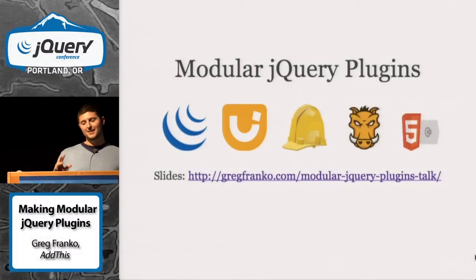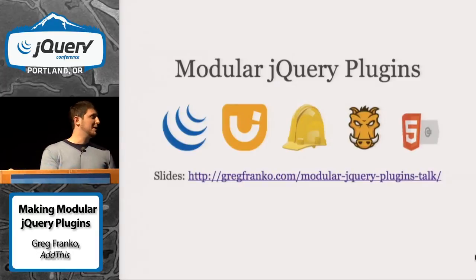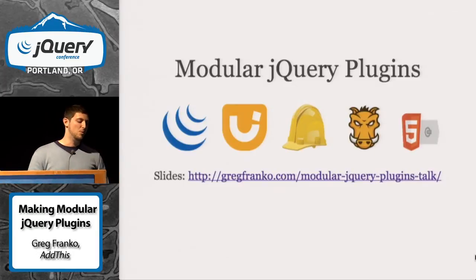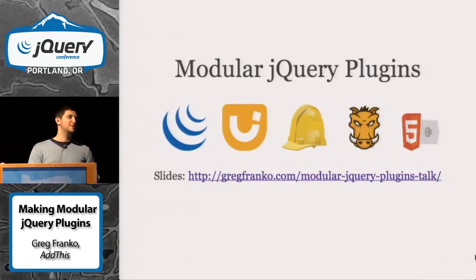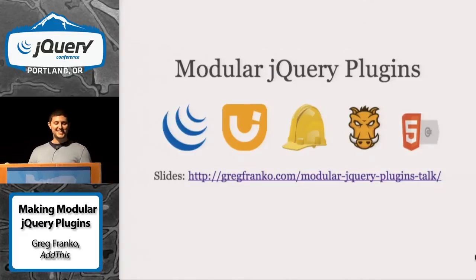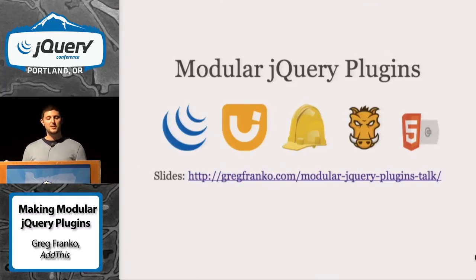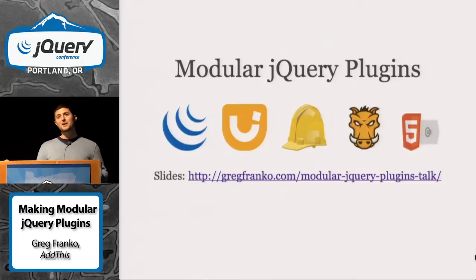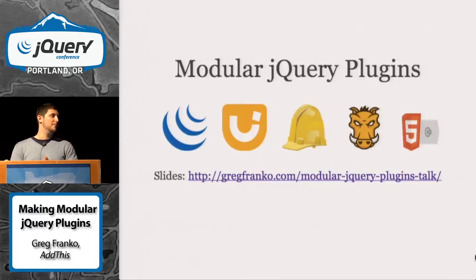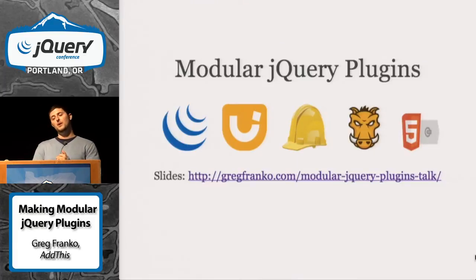We're going to talk about how to make your jQuery plugins modular. We'll mention and look over the jQuery UI widget factory for making plugins. That construction hat icon is for a new library that I'll be officially open sourcing today. It's very similar to the widget factory. We'll also talk about Grunt, about making custom builds on the command line, and another library I built for making custom web UI downloads.